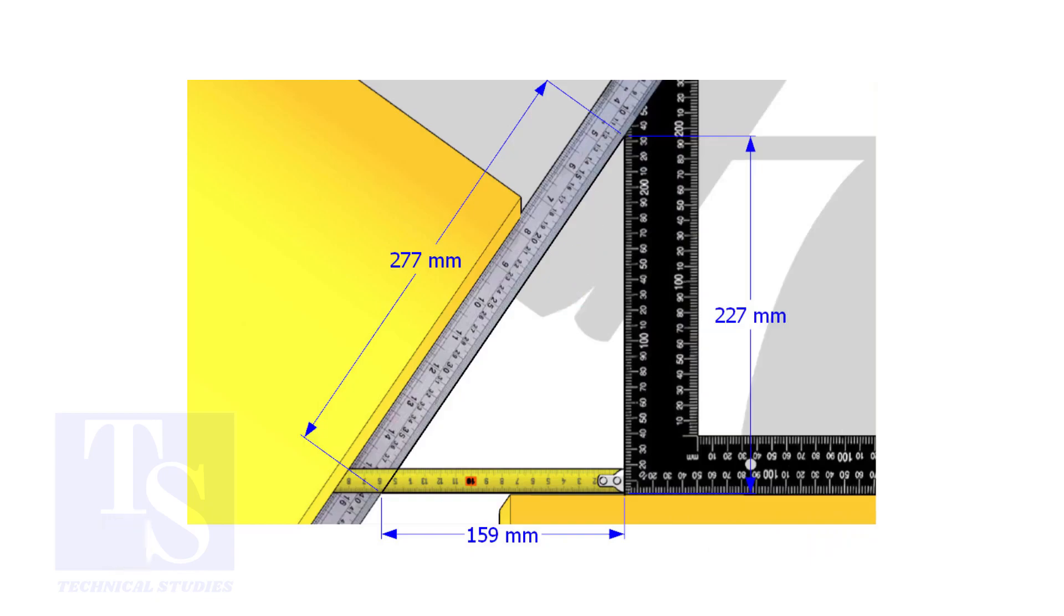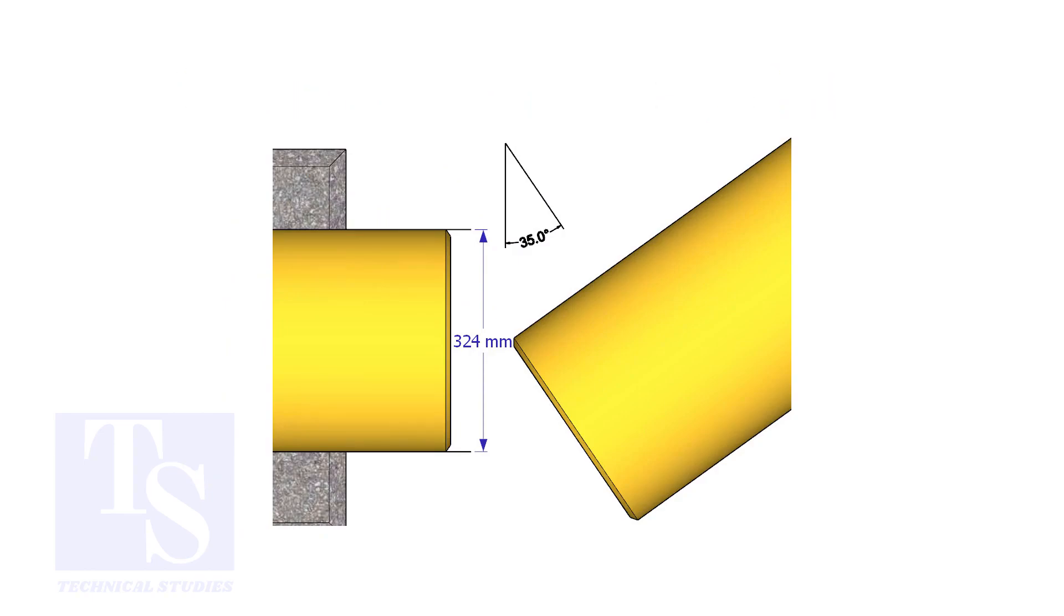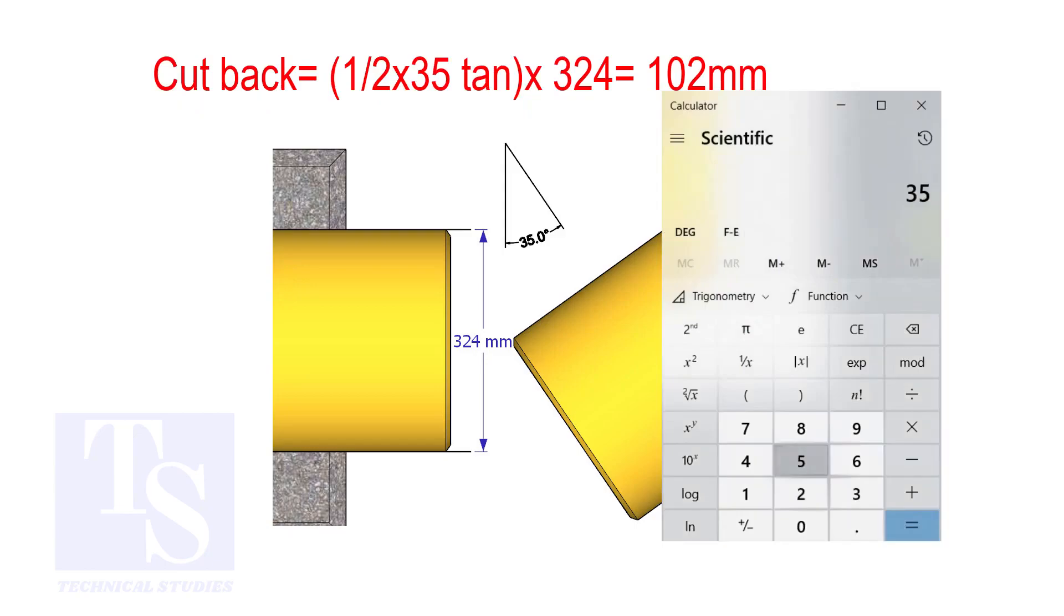How to calculate the cutback of a single cut miter. When it is a single cut, the cutback is half degree tangent multiplied by the OD of the pipe. The answer is 102 millimeters.